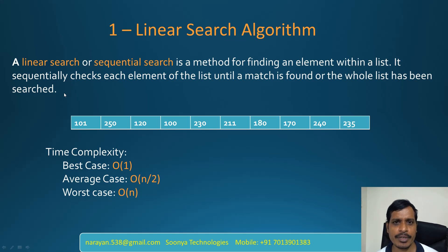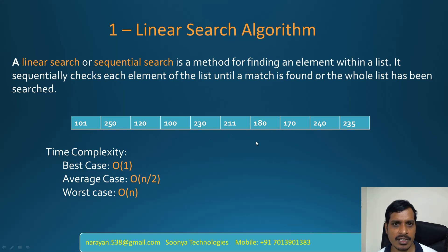For example, a company announced the selected students for a job. We need to check whether a particular student was selected or not, so here we will use linear search. For example, we need to find whether the student with ID 230 is selected or not. Here we have a list of student IDs, and we need to check if student ID 230 is selected.